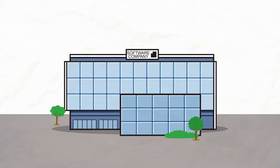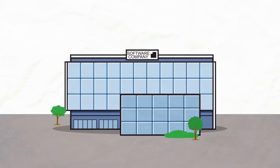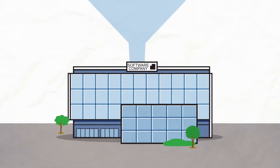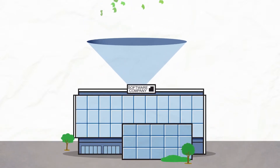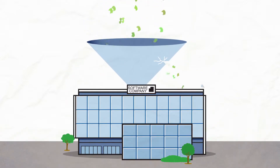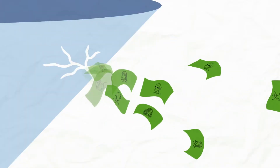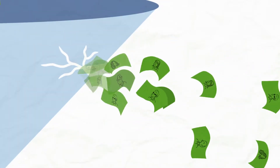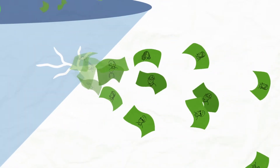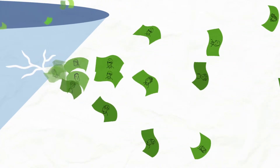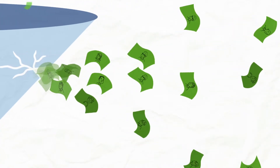Let's face it, as a software company that sells online, driving conversions is always a priority. You know your percentage of funnel leakage and that much of it is due to piracy. That's a lot of revenue leaking out of your sales funnel. But frankly, these unlicensed users represent a significant opportunity that shouldn't be ignored.